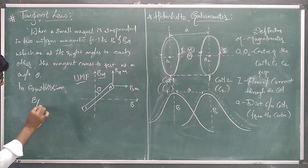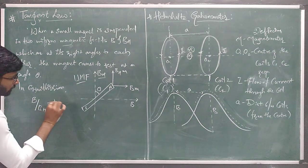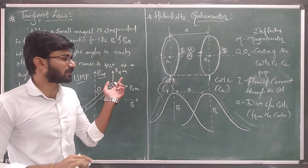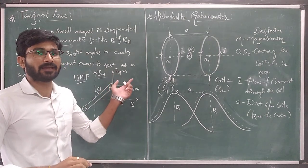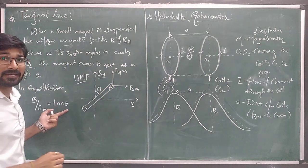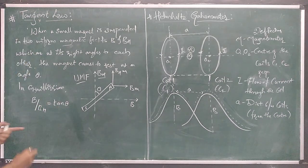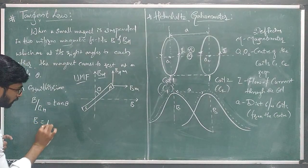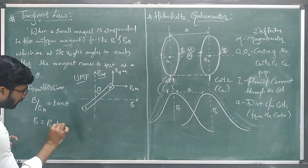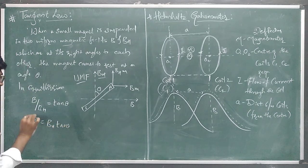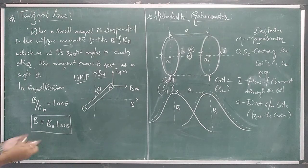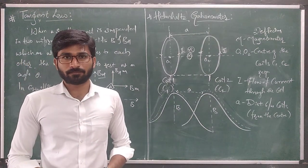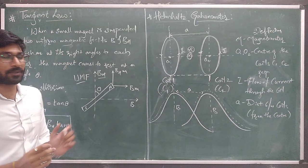In equilibrium, B divided by Bh equals tan theta — or equivalently using sin(90 - theta) — we can rewrite this as tan theta. So we get B equals Bh times tan theta. This is what the tangent law states.